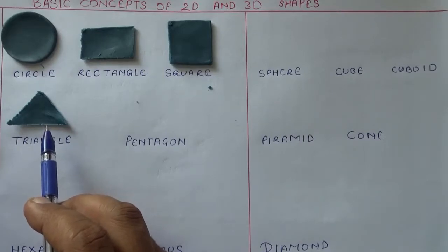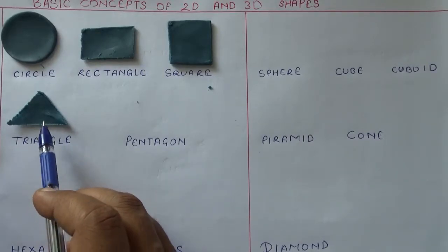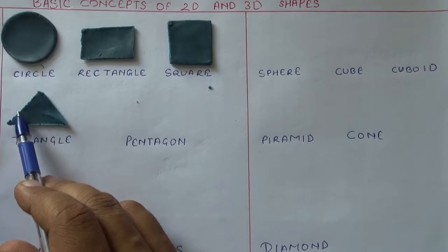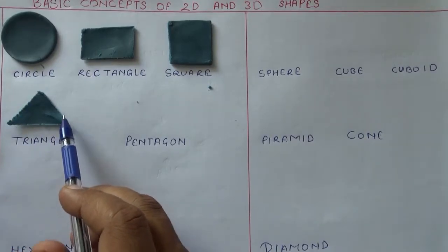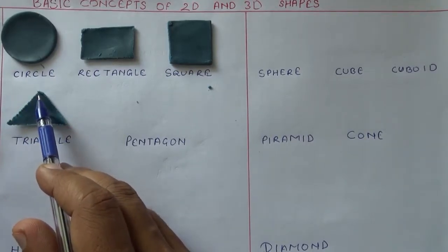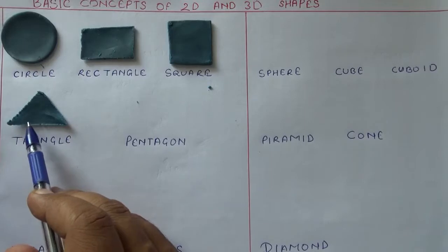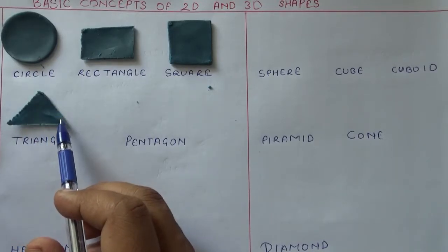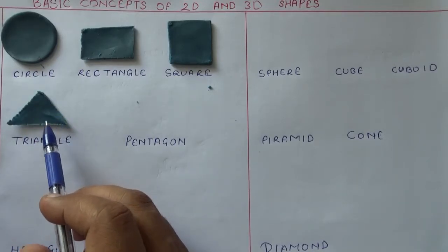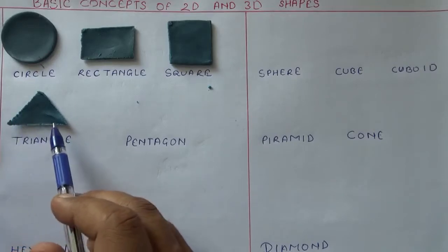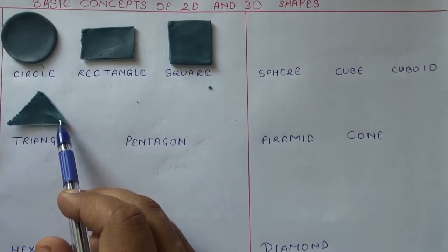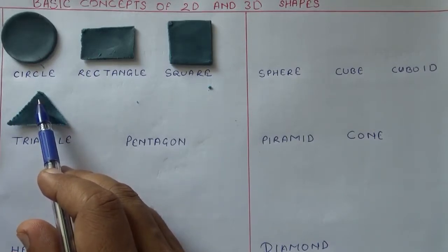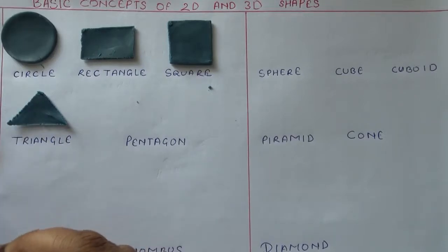Triangle is a shape with three sides: side one, side two, side three. A triangle is a two-dimensional shape having three angles: angle one, angle two, angle three. That is why it is known as a triangle.